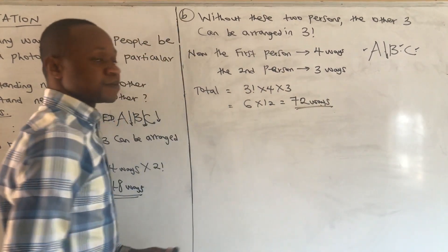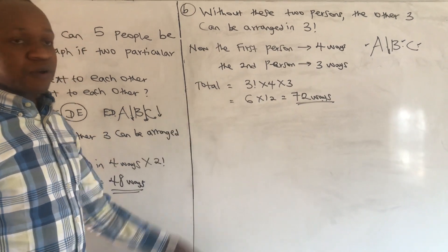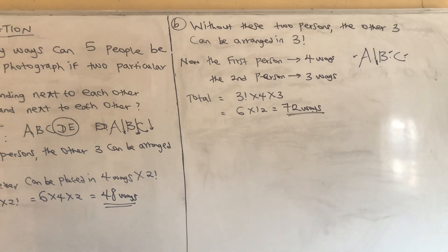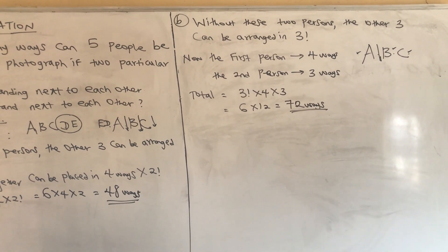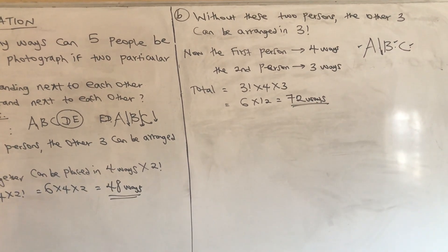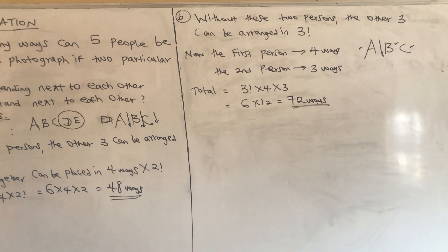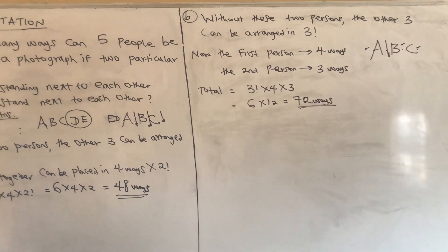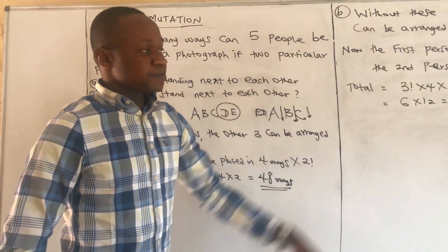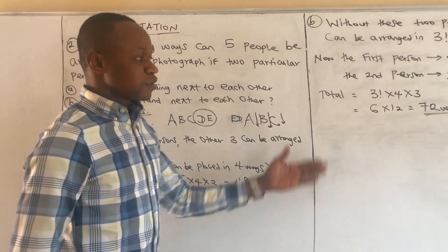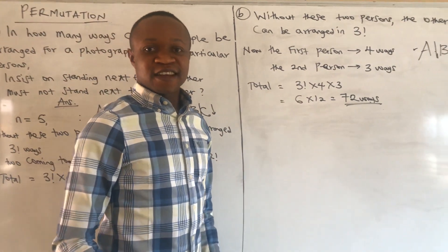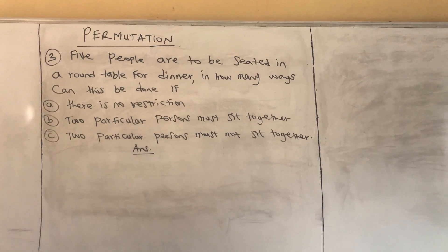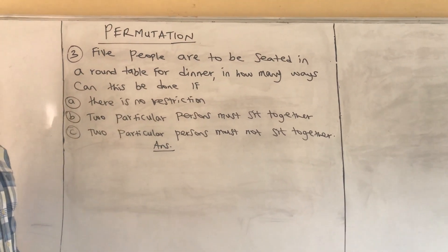That gives us 6 × 12 = 72 ways of arranging five people if two of them must not stand together. We don't need to divide by two because these are human beings — they are distinguishable and cannot be repeated.